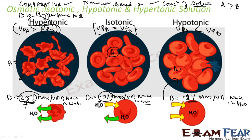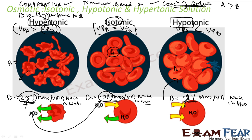So when you want to inject saline water, it's always best to inject only 0.9% mass by volume saline water. If you decrease or increase the concentration it is not good for your body. The names hypotonic, hypertonic, and isotonic depend on the concentration of solute. Less concentration means hypotonic; more concentration means hypertonic. My 0.9% saline water is isotonic to red blood cells.